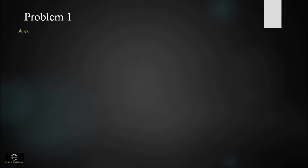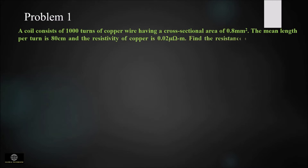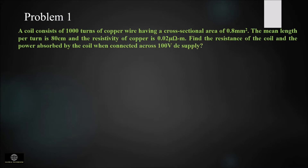A coil consists of 1000 turns of copper wire having a cross-sectional area of 0.8 mm square. The mean length per turn is 80 centimeter and the resistivity of copper is 0.02 micro-ohm meter. Find the resistance of the coil and the power absorbed by the coil when connected across a 100V DC supply.